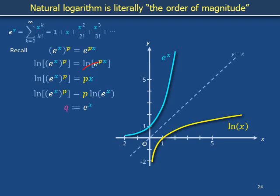Everywhere we had e to the x, instead now write q, so that we get natural log of q to the p equals p times natural log of q. Since we did not specify x, we are now free to choose x so that e to the x, meaning q, equals 10.